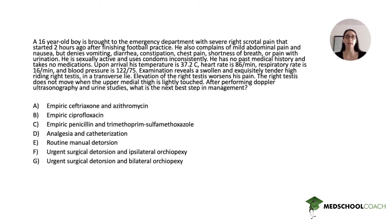He denies pain with urination. He is sexually active and uses condoms inconsistently. He has no past medical history and takes no medications. Upon arrival, his temperature is 37.2 Celsius, heart rate is 86, respiratory rate is 16, and blood pressure is 122 over 75. Examination reveals a swollen and exquisitely tender high-riding right testis in a transverse lie. Elevation of the right testis worsens his pain, and the right testis does not move when the upper medial thigh is lightly touched. After performing Doppler ultrasonography and urine studies, what is the best next step in management?